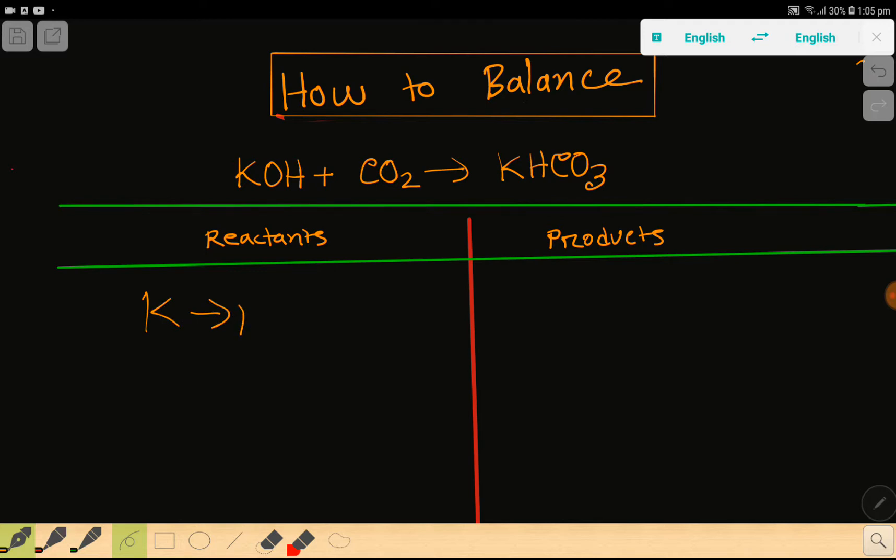On the reactant side, we have potassium which is one, then oxygen which is also one here, then hydrogen. Let me write the number of hydrogen. In the carbon dioxide compound, we have carbon which is one. Then we have oxygen, so let me add two more oxygen. Basically, we're getting three oxygen on the reactant side.